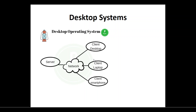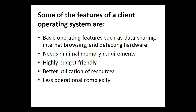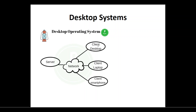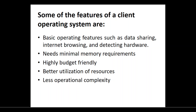You may have a desktop, laptop, or smartphone. You can use the network to connect to servers and access them. Personal computers are considered client computers, not servers. The main features of client operating systems include basic operations such as data sharing, internet browsing, and detecting hardware. The desktop or client computer can share data, browse the internet, and detect newly connected hardware.